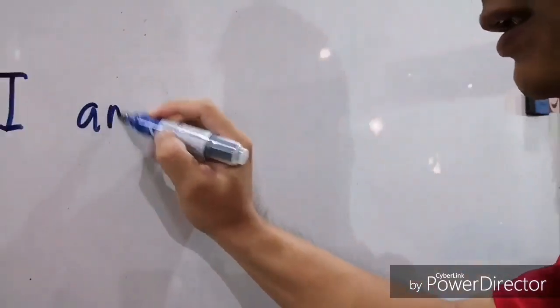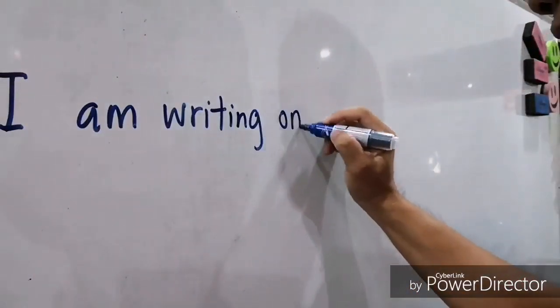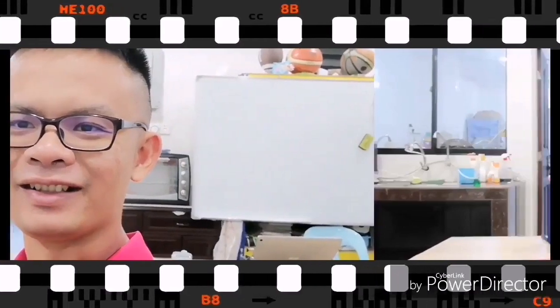Hi! Today we are going to talk about Present Continuous Tense. Present Continuous Tense is used to describe what is happening right now. For example, I'm writing on the board. Your teacher is singing.